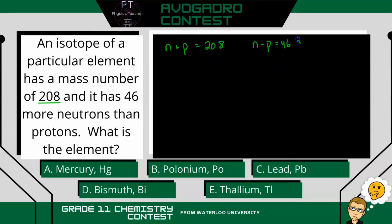So let's look at the second equation here. We'll call this equation 2 and this equation 1. And we're going to rearrange to solve for n. So n is going to be p plus 46. And I can take this and substitute it into equation 1.